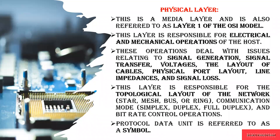What is the physical layer? This is layer 1 of the OSI model. This layer is responsible for electrical and mechanical operations. It deals with issues in signal generation or signal transfer, such as voltage and current problems, and issues in the cable layout when connecting a number of hosts. If there is a signal loss, this physical layer is responsible for handling it, and this layer is also responsible for the complete layout of the network — the layer where nodes form a network.